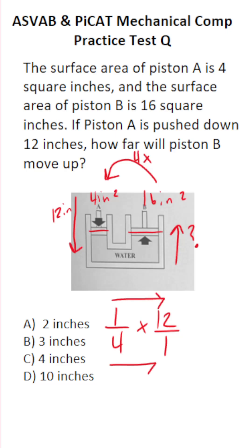Then when you multiply two fractions, you just multiply straight across. 1 times 12 is 12. 4 times 1 is 4. 12 divided by 4 is 3. So it's going to move up 3 inches in response. So this one is B.